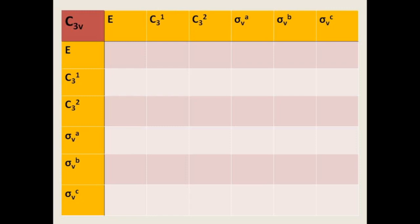We will follow the same pattern as before. We take a symmetry element from the left column, and each element of the left column is taken in a binary combination with the elements of the horizontal row. The binary operation result is placed at the junction position, as was done in the earlier video for C2V.